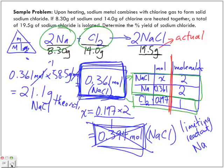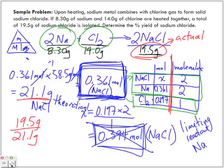So 21.1 grams of NaCl is the theoretical mass of sodium chloride. Now, to find the percentage yield, we're going to divide the actual yield — 19.5 grams — by the theoretical yield — 21.1 grams. Grams cancel out, and we multiply by 100. We get a percentage yield of 92.4%.